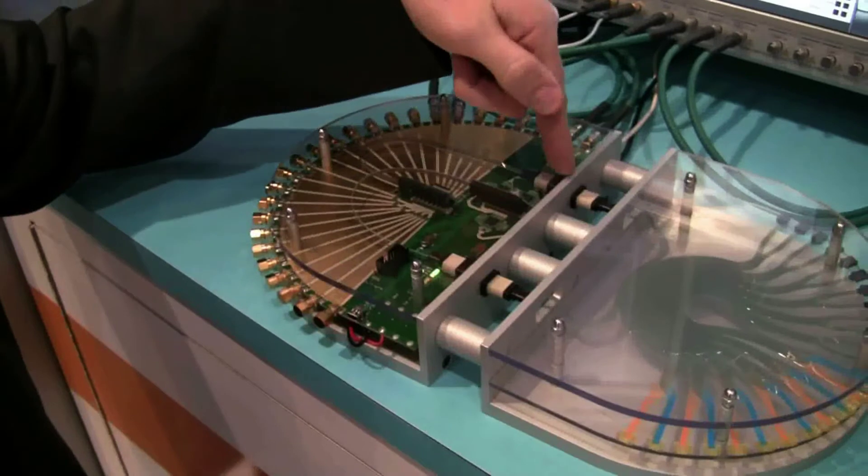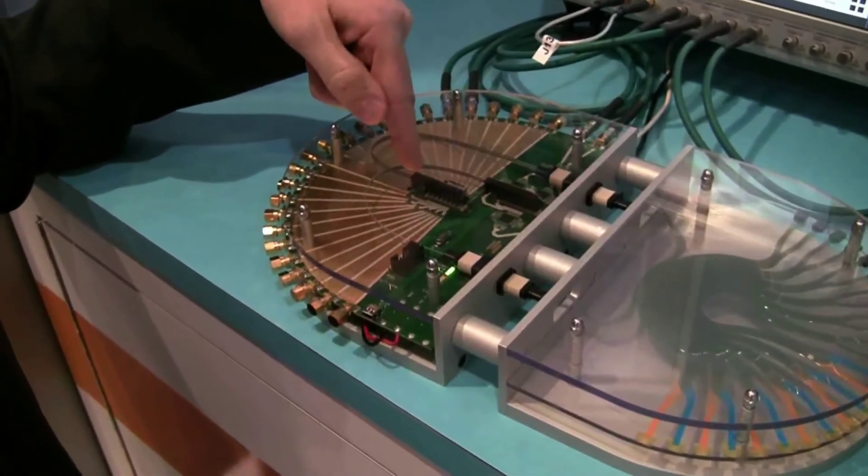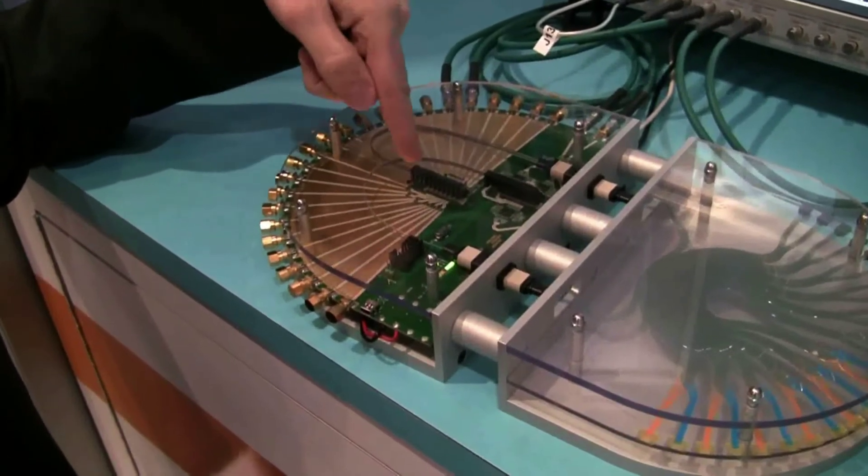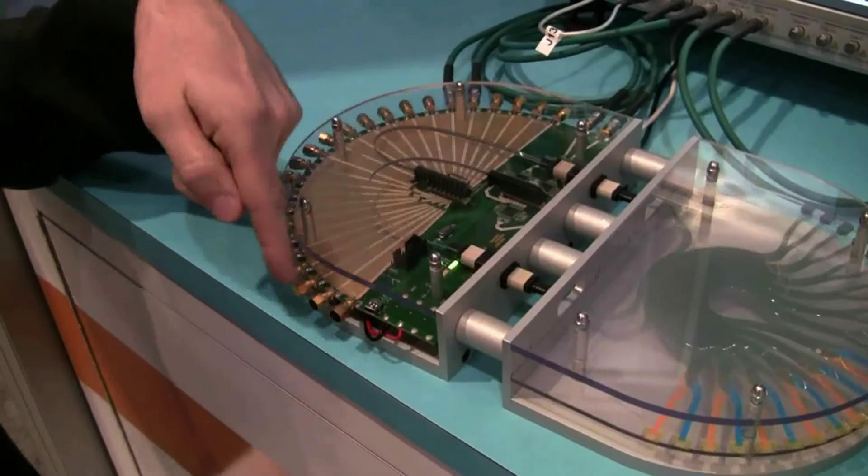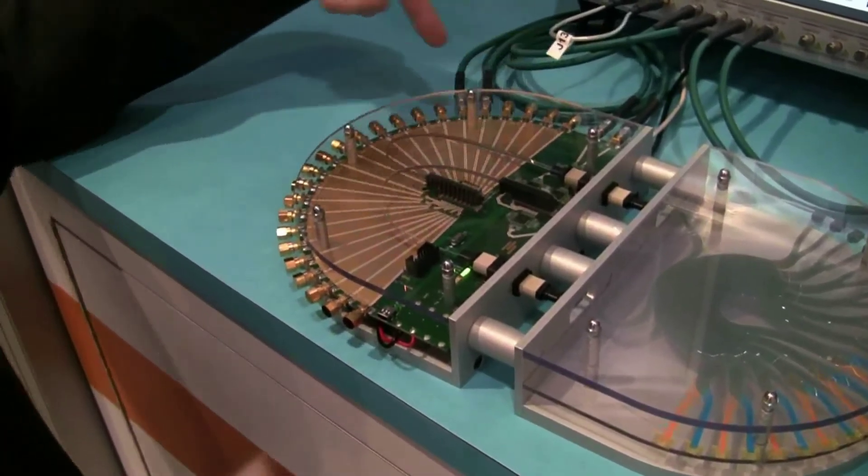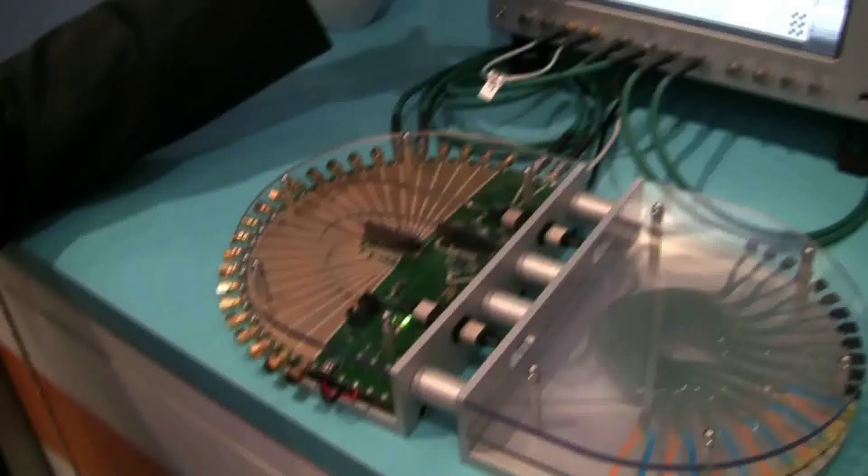and it's looped back on itself to the receive module that does the optical to electrical conversion. Then the 10 gigabit data is presented to the perimeter SMA connectors on the valve board. I've picked off one differential output pair and presented it to the scope.